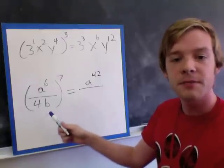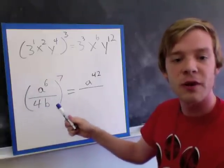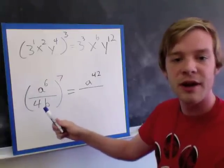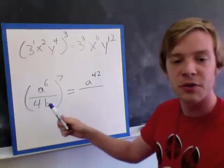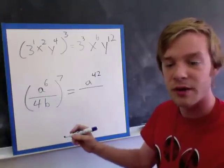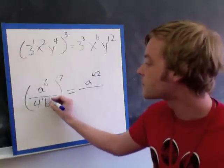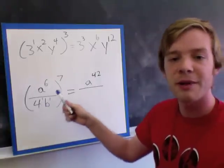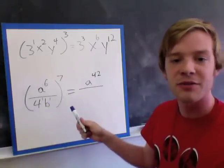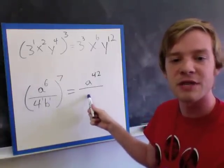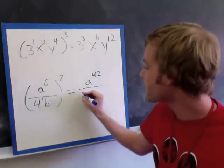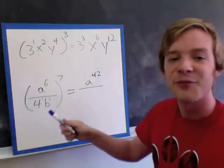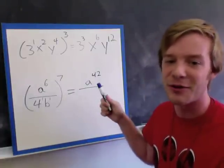On bottom, I'm also bringing the 7 in to the 4 and the b. So I don't have a power for either of these shown, so that's going to count as a power of 1. And I want to multiply my powers times by the power outside. So this will be 4 to the power of 7 and b to the power of 1. Sorry, 4 to the power of 7 and b to the power of 7.